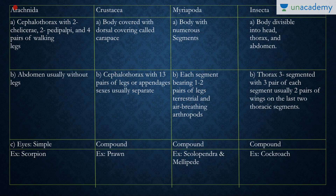Arachnida includes all animals with eight limbs, such as scorpions, spiders, ticks, and mites. They have a cephalothorax with two chelicerae and two pedipalps — these are appendages that help with sensory input and defense against predators. They also have four pairs of walking legs, and the abdomen usually lacks legs.